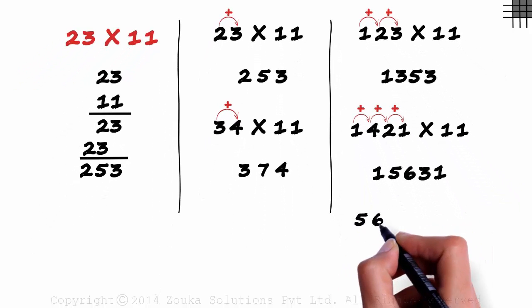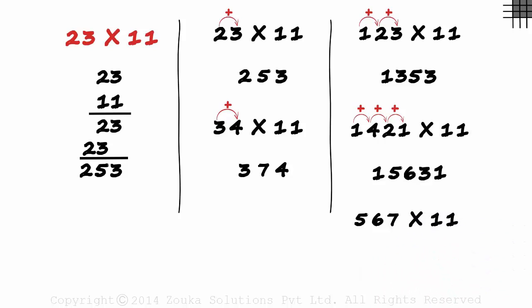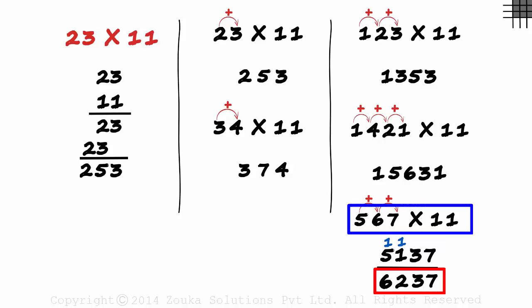What about 567 times 11? This one's simple as well, just that it involves some carrying over. First digit 5 as is. 5 plus 6 is 11. We write 1 and carry the other one over. 6 plus 7 is 13. 3 written under here and the one is carried over. And we write the last digit 7 here. 5137 is not the answer. Don't forget the numbers that we have carried over. 7, 3, 1 plus 1 is 2 and 1 plus 5 is 6. 567 times 11 is 6237.